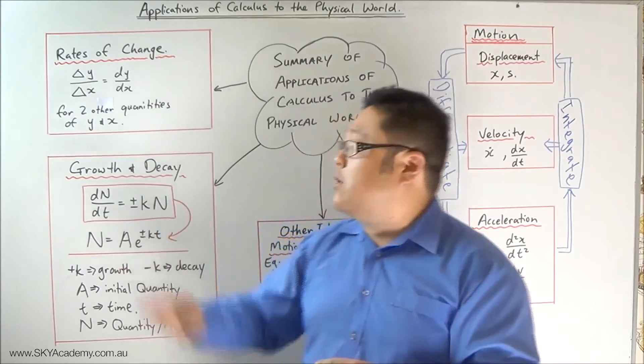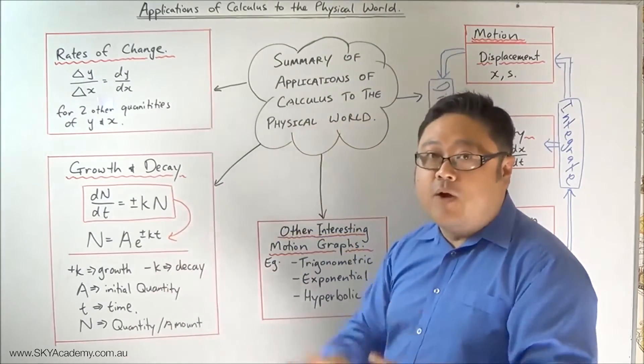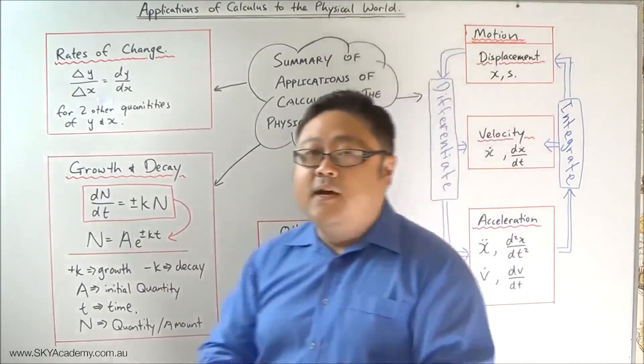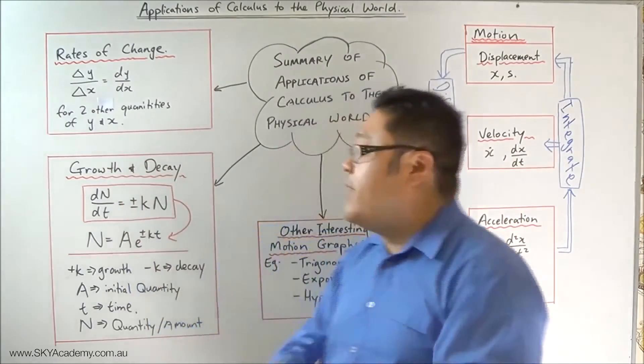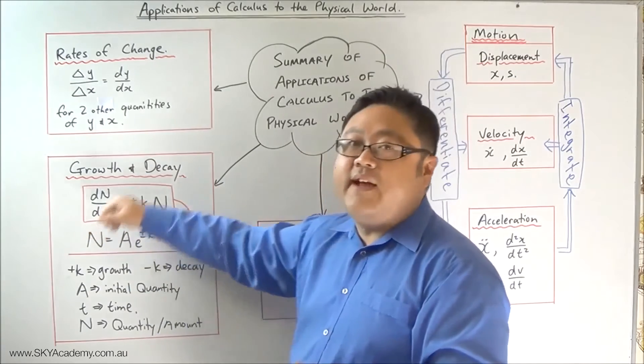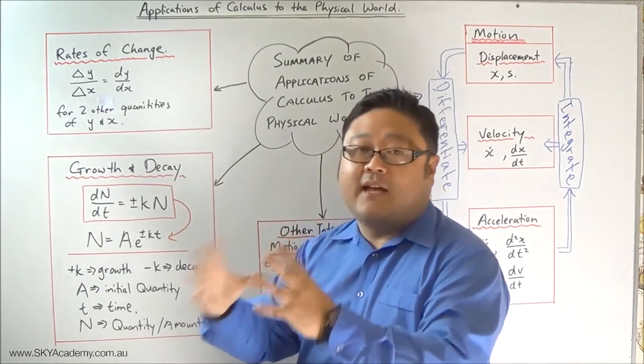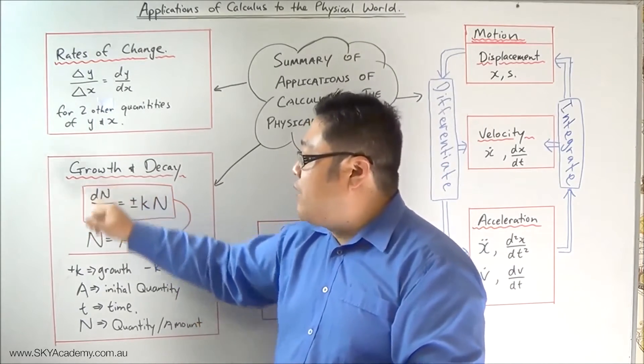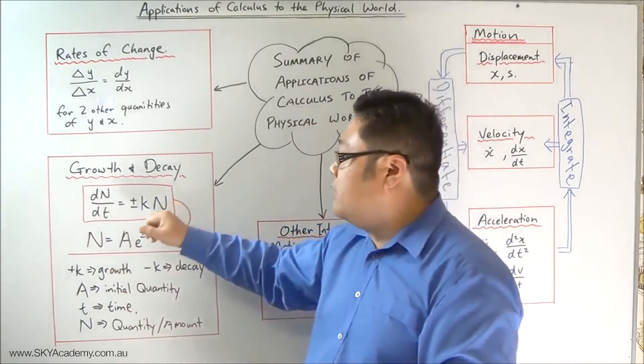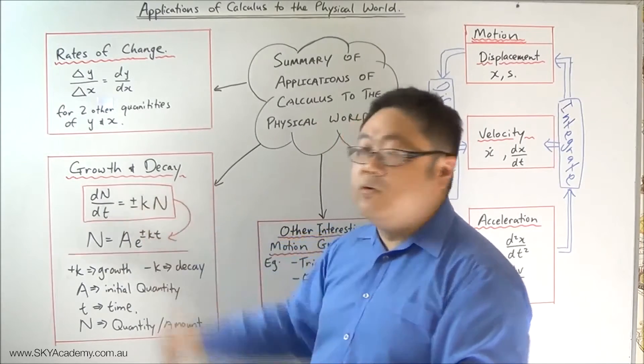We started off with rates of change, then we moved on to growth and decay. And we got to see that when things grow and when things decay in the physical world, they often do so in a way that is proportional to the quantity at that given point in time. So the rate of growth or the rate of decay will be proportional by some constant k to the quantity of the thing that's growing or decaying.